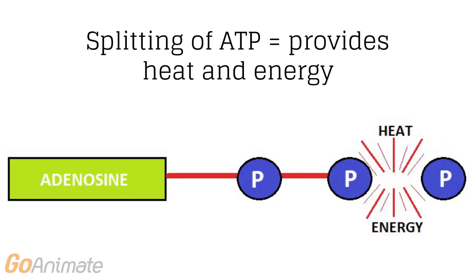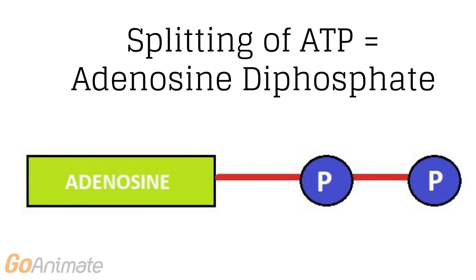The third phosphate molecule of ATP splits. During the split, heat and energy is produced. The heat produced is the only by-product from ATP and it is not harmful to the body. This split creates adenosine diphosphate, which consists of one adenosine molecule and only two phosphate molecules. Adenosine diphosphate cannot produce energy for movement.